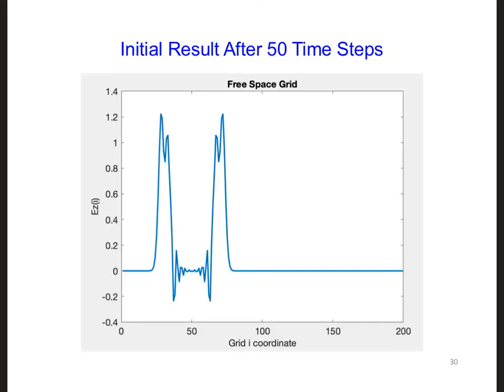If your code is working correctly, you should see a wave propagating away from your source at i equal Imax divided by 4. So that would be 50, i equals 50 for our current setup. After 20 time steps, the source should turn off. At the end of the 50 time steps, your EZ plot should look like this.